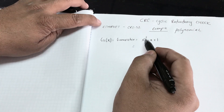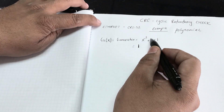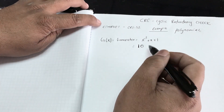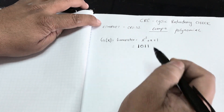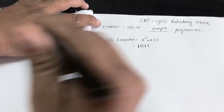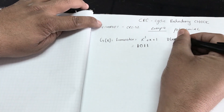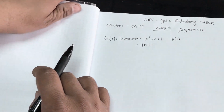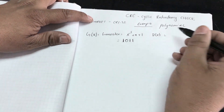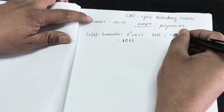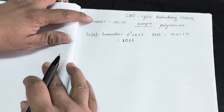I can convert this generator into binary form: bit 3 is high so I have x³, x² is low so I have 0, x¹ is high, and x⁰ is high — giving binary 1011. Next, I'll pick a data value to transmit, which I'll call D(x).